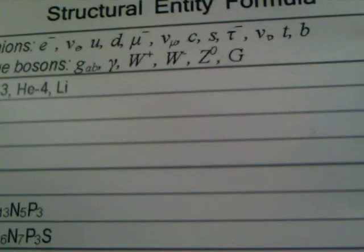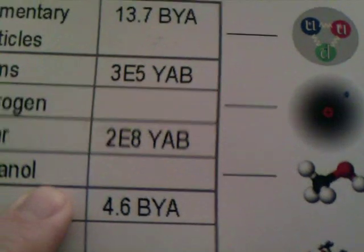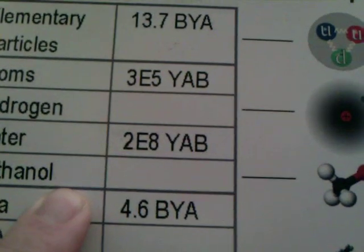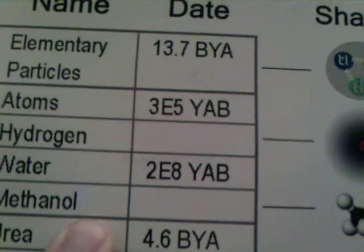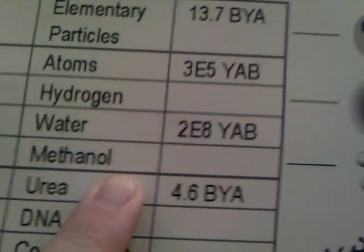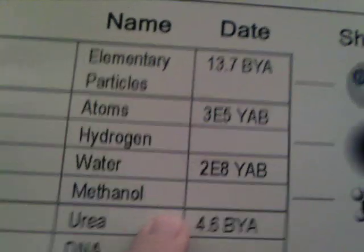These early suns exploded, the early universe expanded more, and soon more stars formed, powering the formation of larger atoms. By 4.6 billion years ago, the sun had formed. Shortly after, the Earth formed in rotation about the sun. The sun, burning hydrogen in its core, began to release photons.